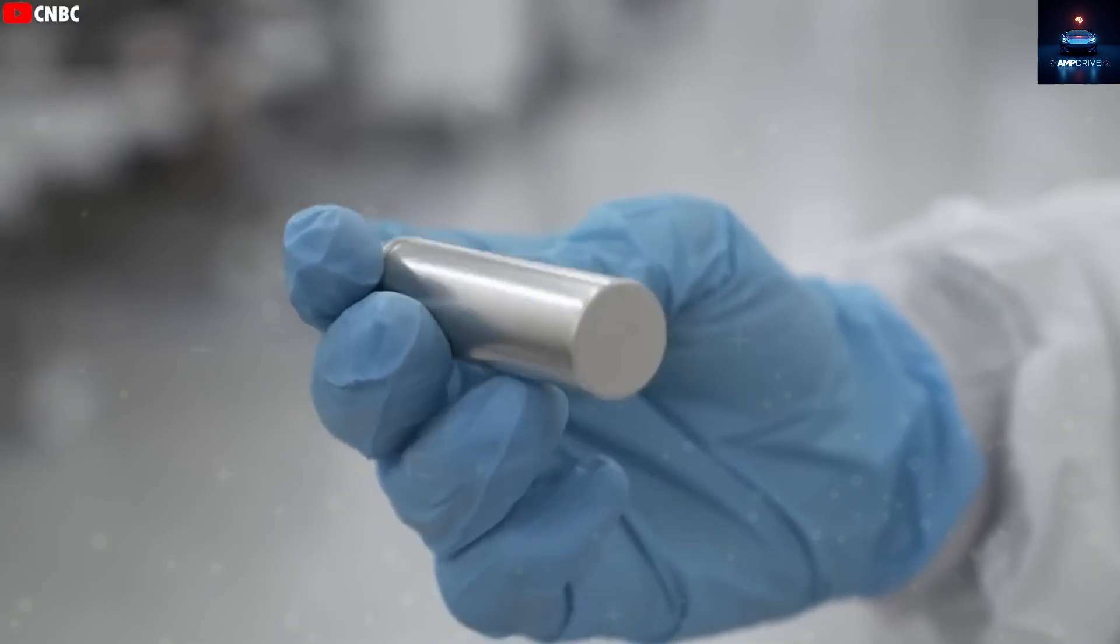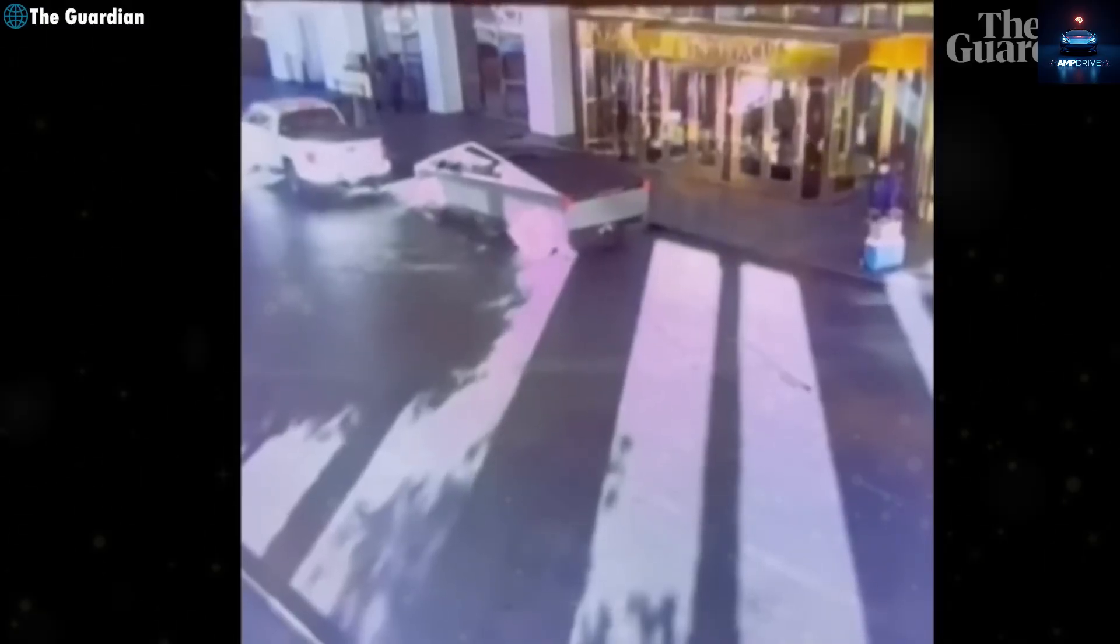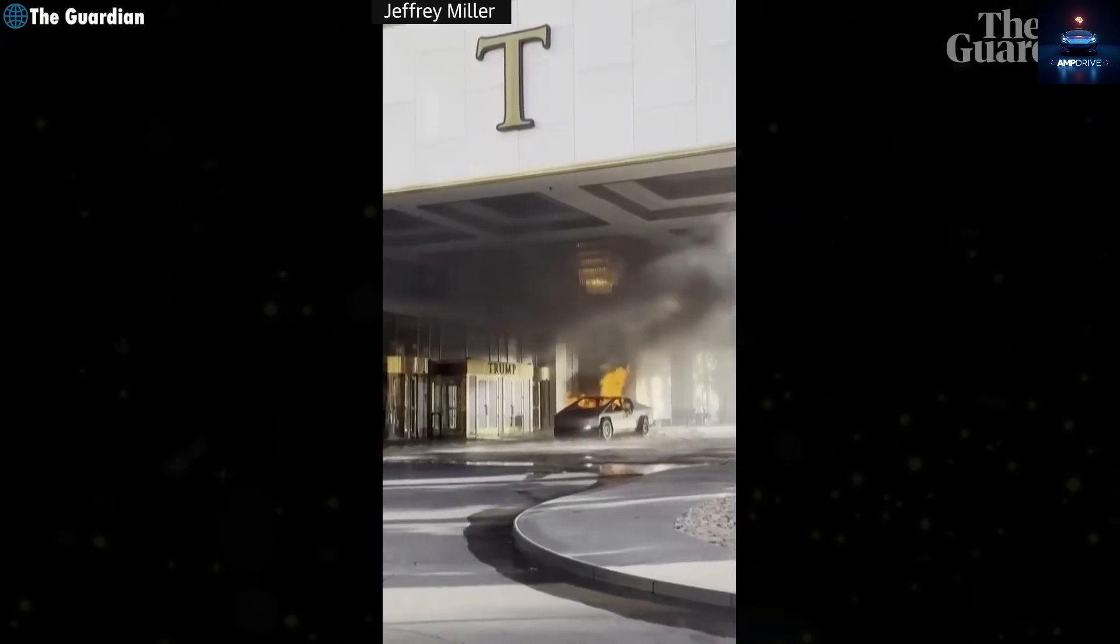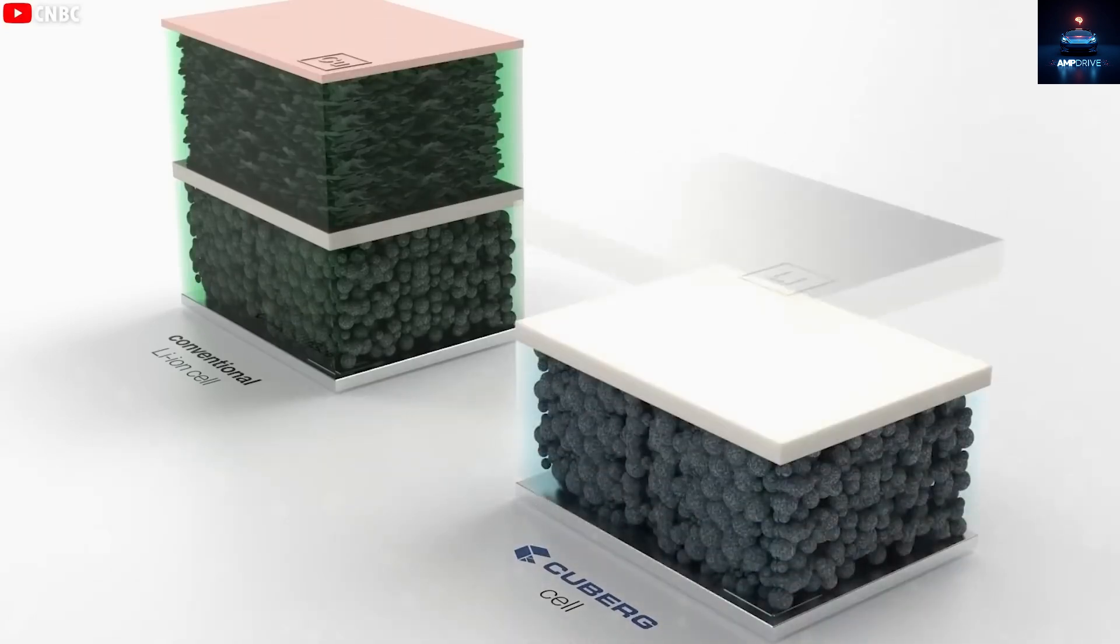Some solid-state batteries have shorter lifespans and are still vulnerable to dendrites and high heat over 300 degrees Celsius, which can cause thermal runaway or even internal short circuits. So while solid-state batteries are generally seen as safer, the 4680 may actually be more reliable due to its more mature and stable performance.